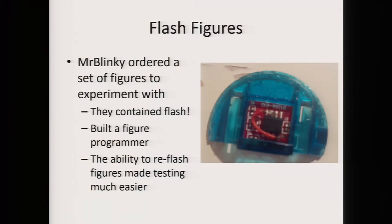This is where I was at at the last Congress. Right afterwards I was contacted by a guy called Mr. Blinky, who wanted to order his own figures and reproduce my research. But something funny happened — when he ordered his figures, they had flash in them. It turns out there are actually three types of figures: ones with unpopulated PCBs, ones with maskROMs, and ones that contain flash. Even cooler, you could basically just program the flash right through the contacts of the figure. All you need to do is make a programmer and you can re-flash the figures.